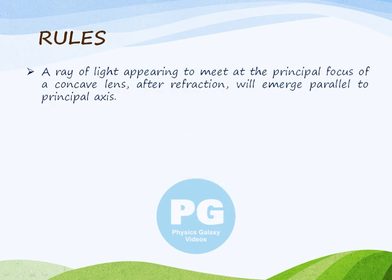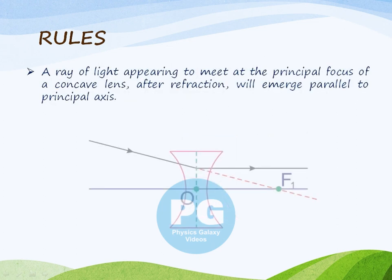A ray of light appearing to meet at the principal focus of a concave lens, after refraction, will emerge parallel to the principal axis. This we have already seen in the definition of principal focus.